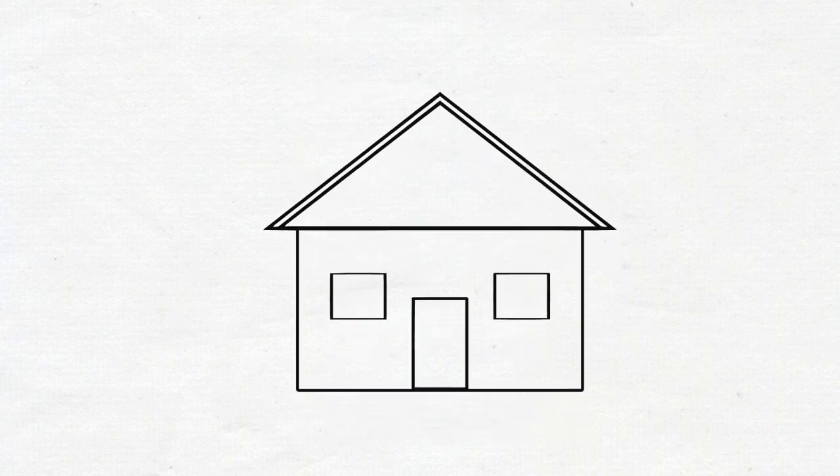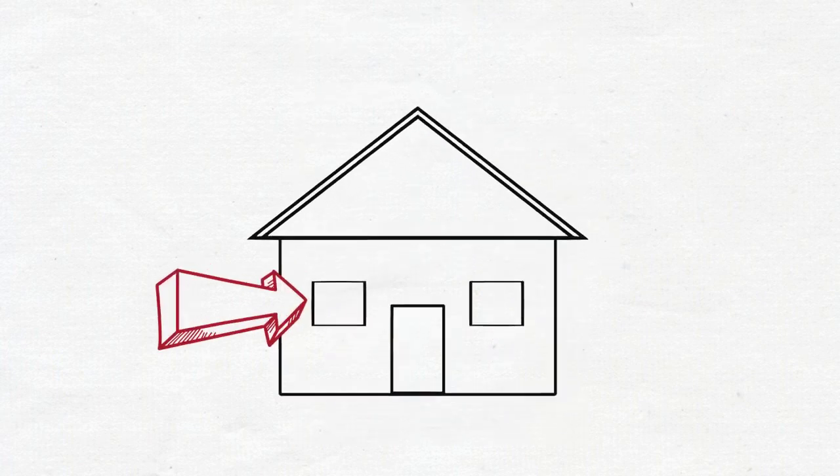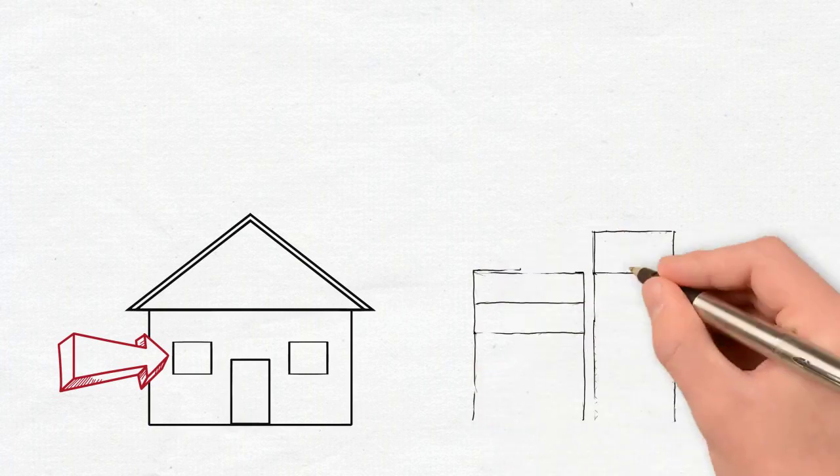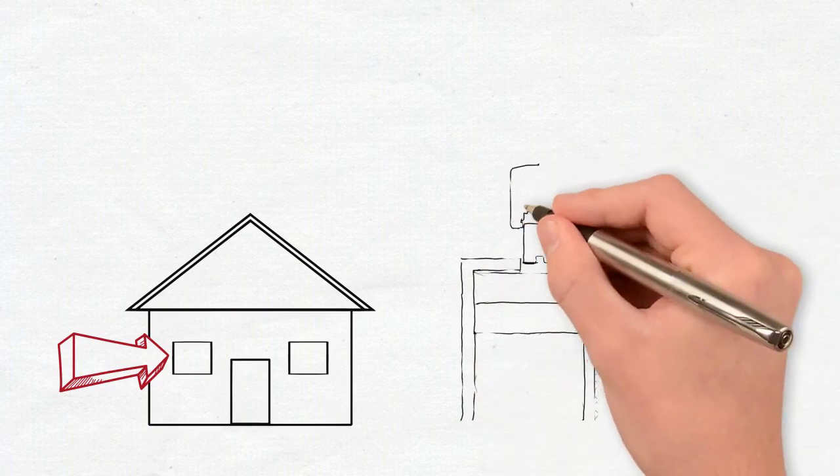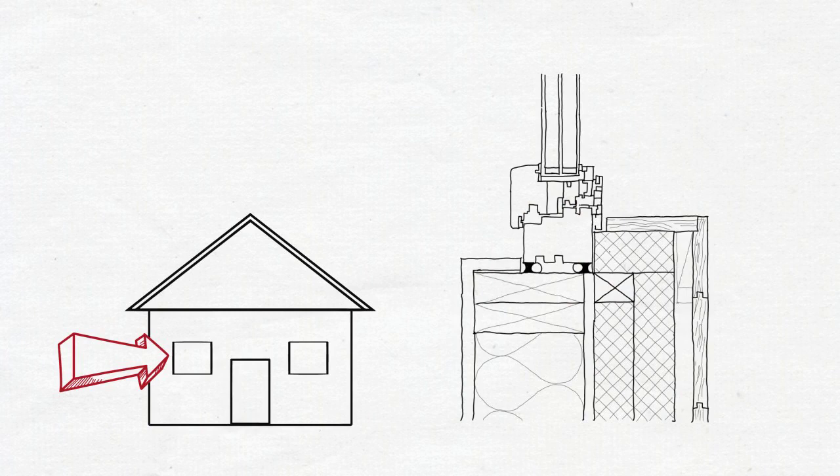We are continuing the series of passive house details for window installation. This is a window in a gem location with wood framed wall and exterior insulation.